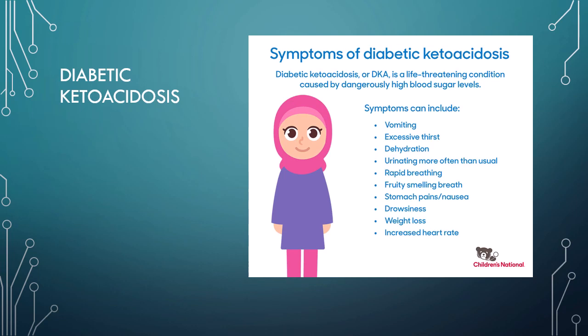Often the first signs that a patient is diabetic come through a urinalysis — a patient goes to see their doctor for fatigue or blurred vision, and glucose in the urine comes back really high. Back in the 1800s, they used to taste the urine to find out if a patient was diabetic — and that's what I call dedication.